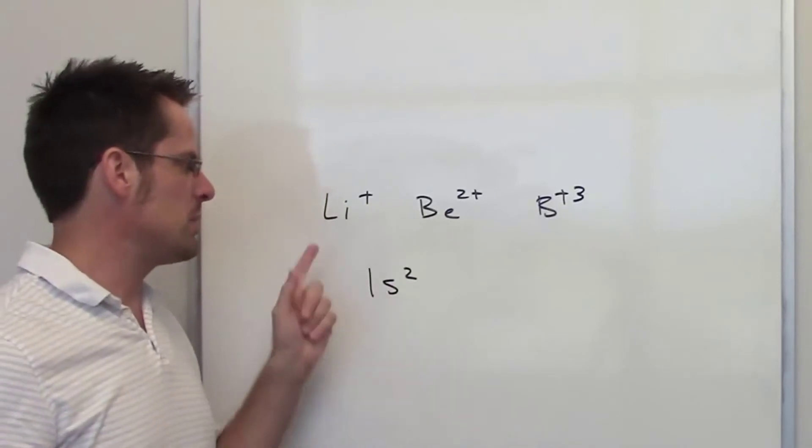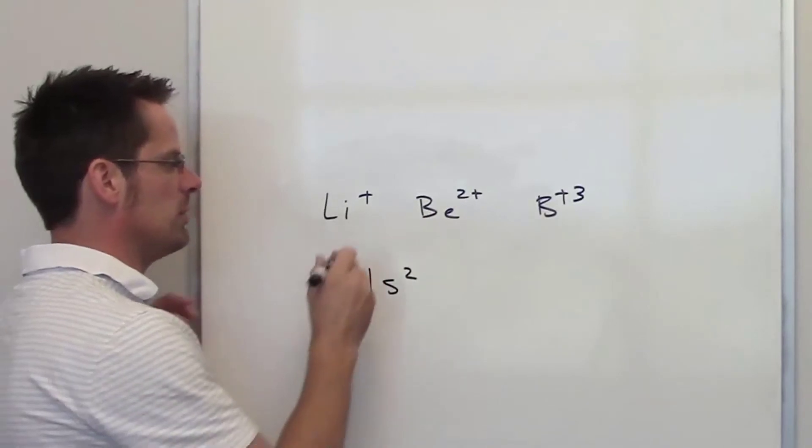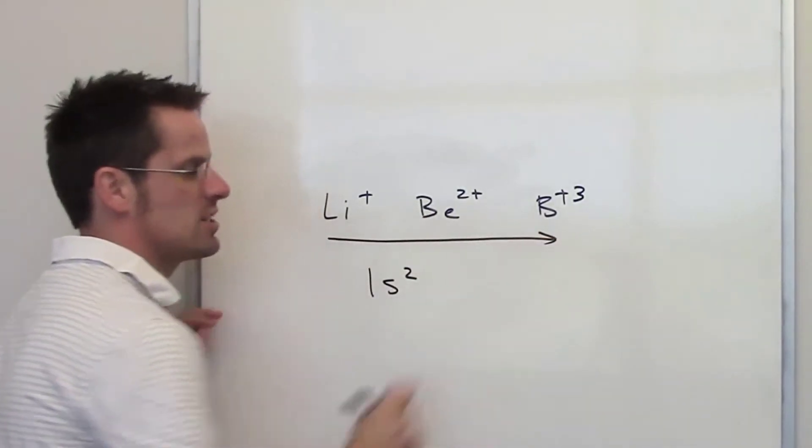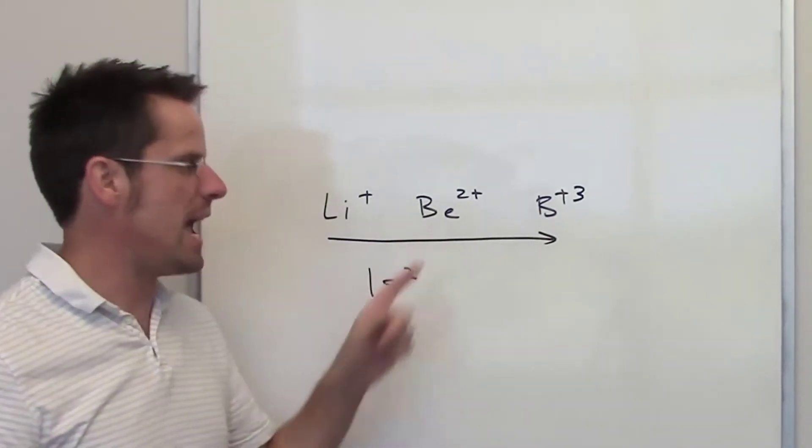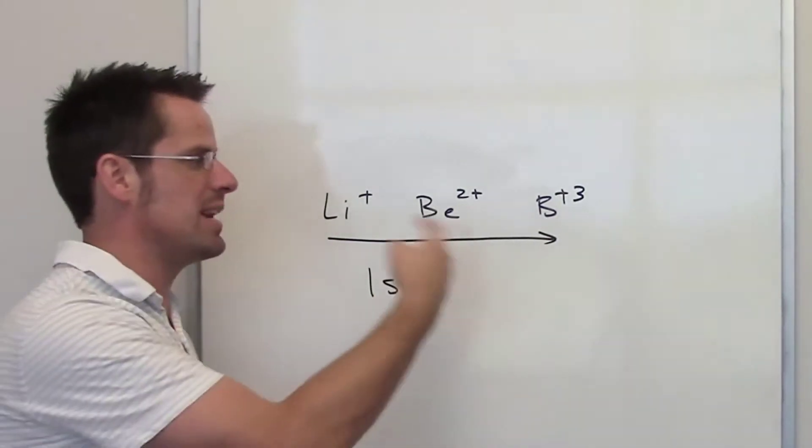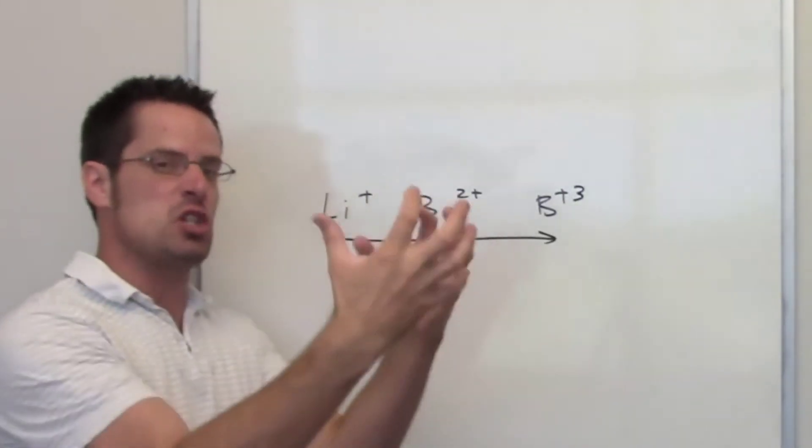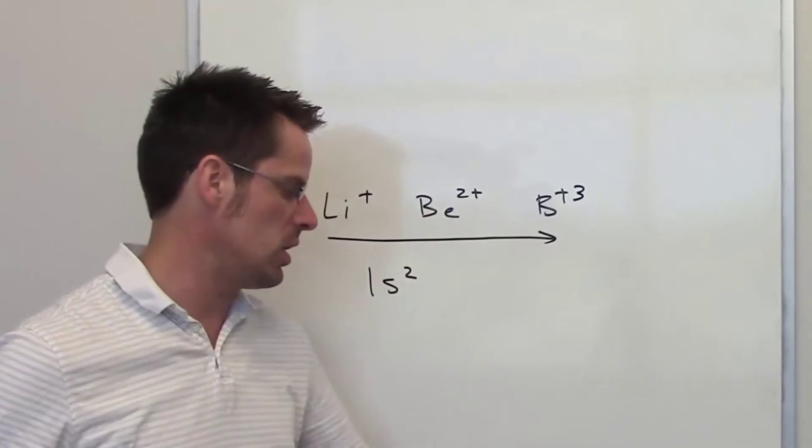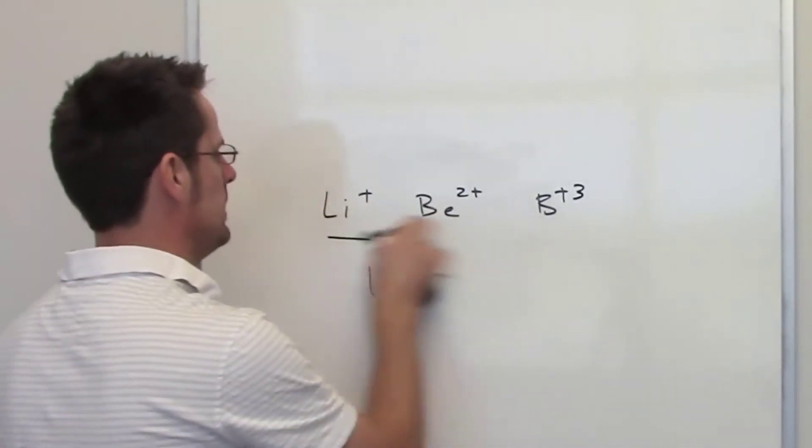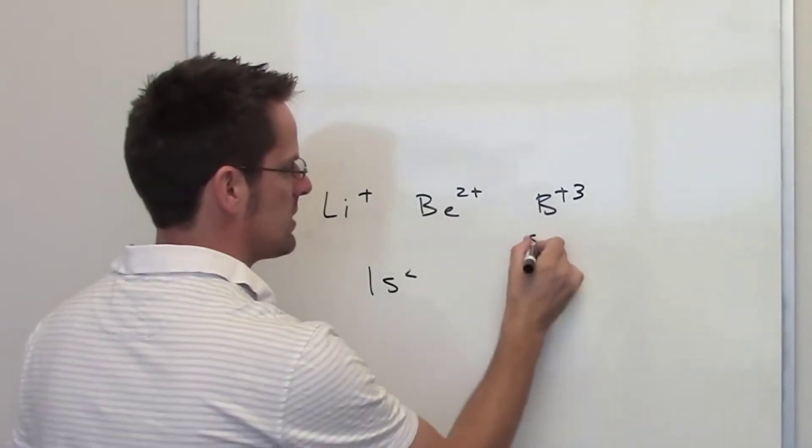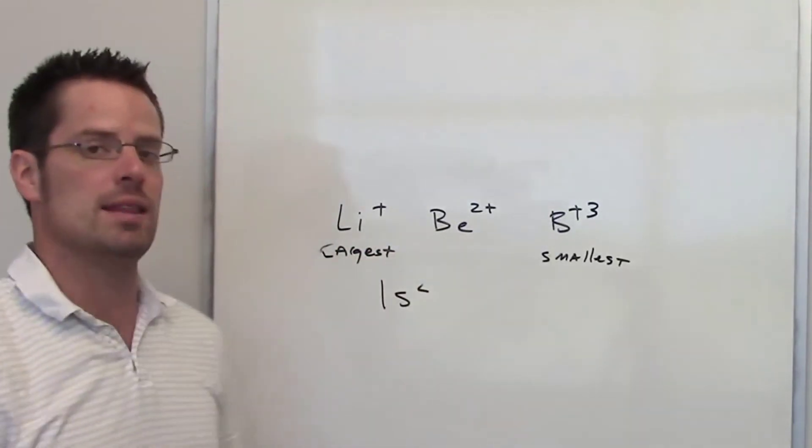The major difference between each of these elements is that we have one more proton in the nucleus as we go from left to right. Just as I said regarding the trend of going across a row on the periodic table, because each of these atoms has one more proton than its predecessor, we'd expect that addition of another proton in the nucleus to suck what electrons it has closer and closer. Thus, I would expect that boron would be the smallest, while lithium would be the largest, and beryllium would be right in the middle.